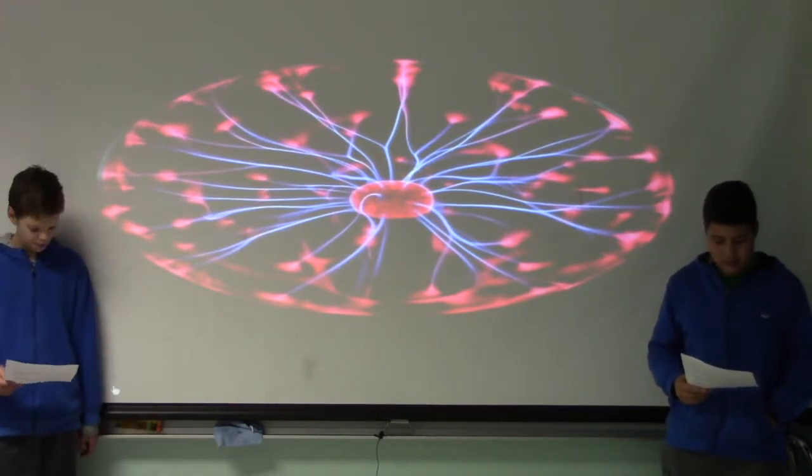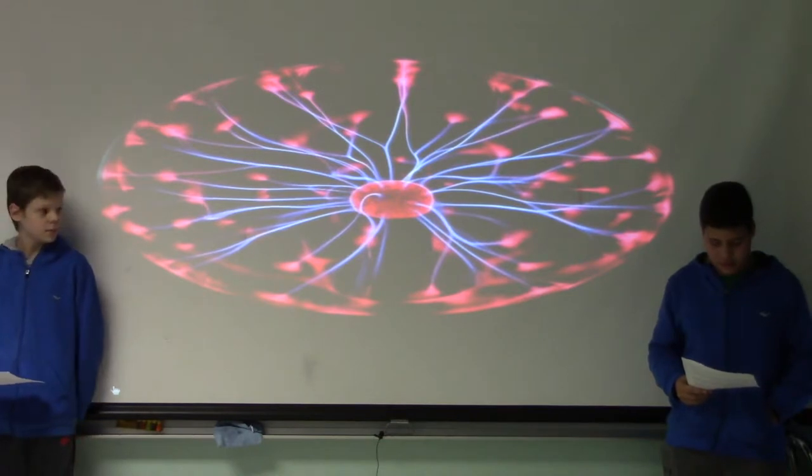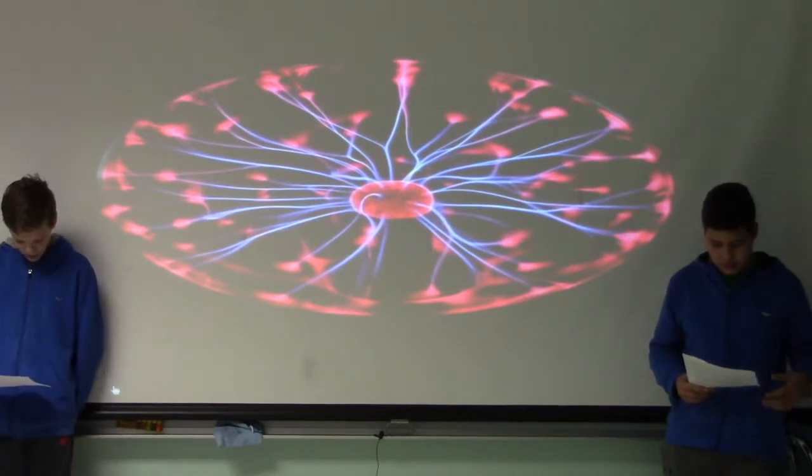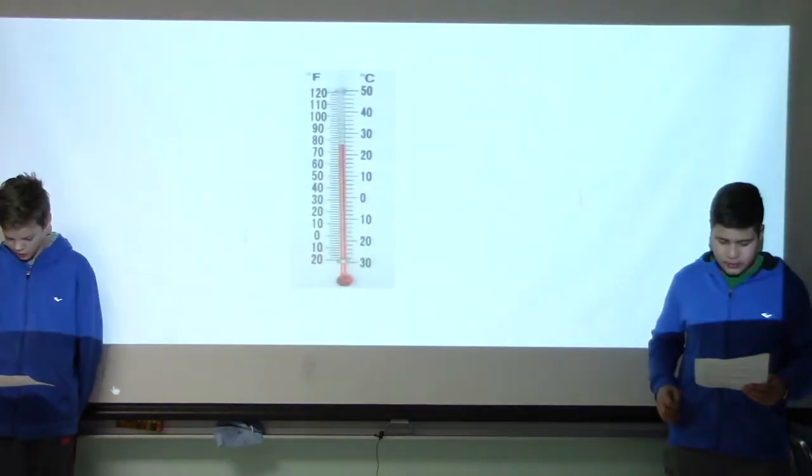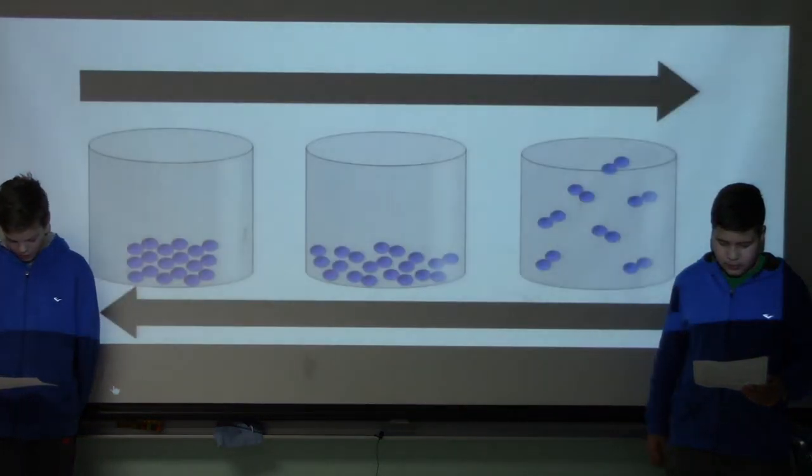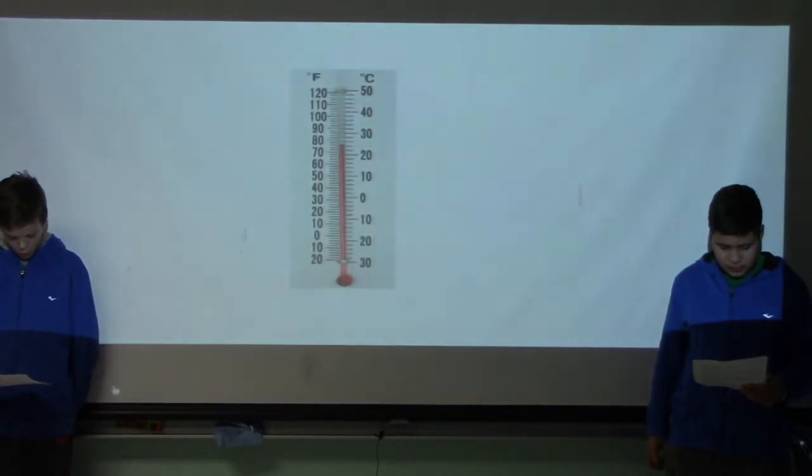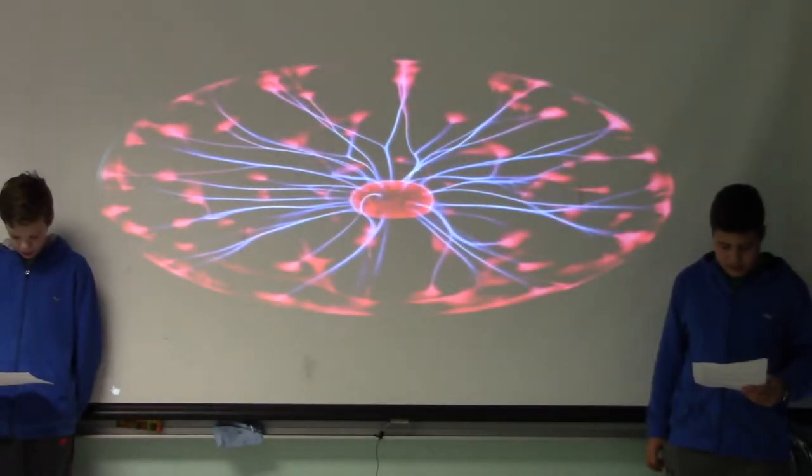It is everywhere. You can find plasma in many different places. Here are some examples of plasma: neon signs, fluorescent light bulbs, candles and flames, and more. Aurora Borealis is a beautiful example of plasma.